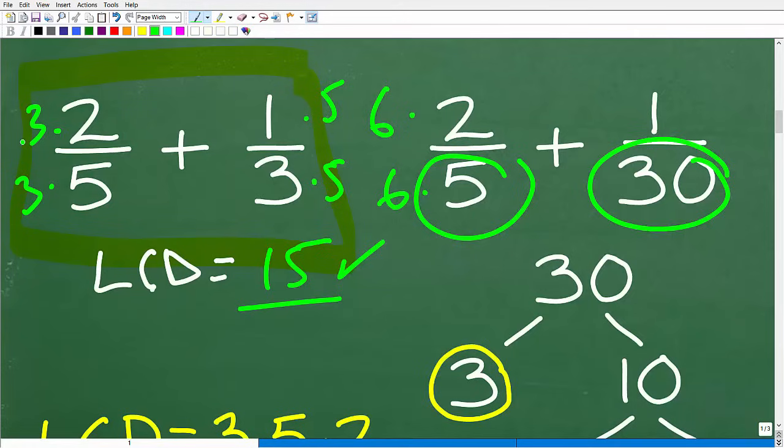First, we have to figure out the LCD. Then we have to rewrite these fractions. Sometimes you have to rewrite both. Sometimes you have to rewrite one. Now, if we have the same denominator, we don't have to rewrite anything. But again, these are simple little denominators. But let's go ahead and talk about how you actually find the LCD. So here, we know the LCD is 30, okay? It's the lowest number that both 5 and 30 go into. But the way you find the LCD involves factoring. We have to prime factor.